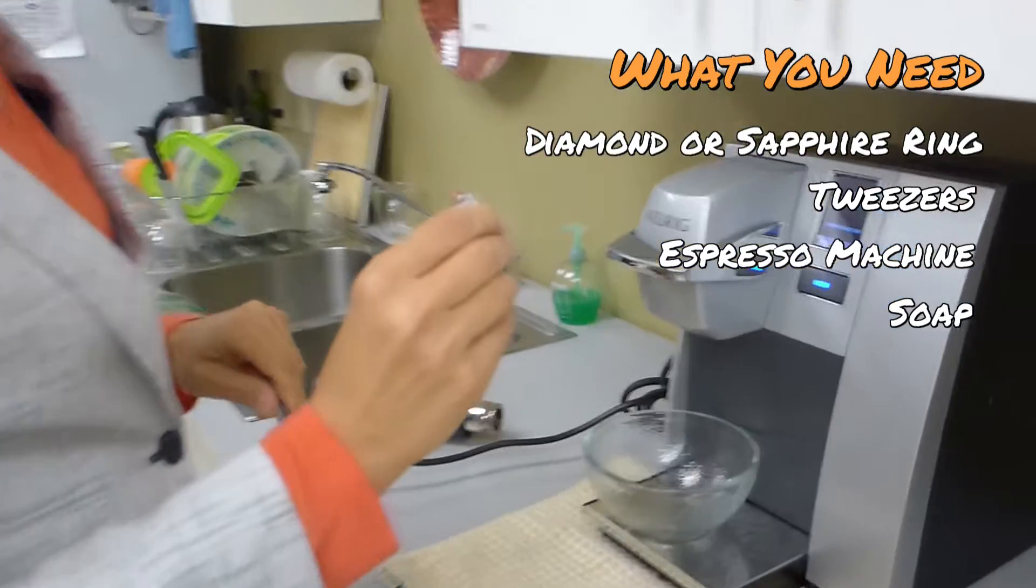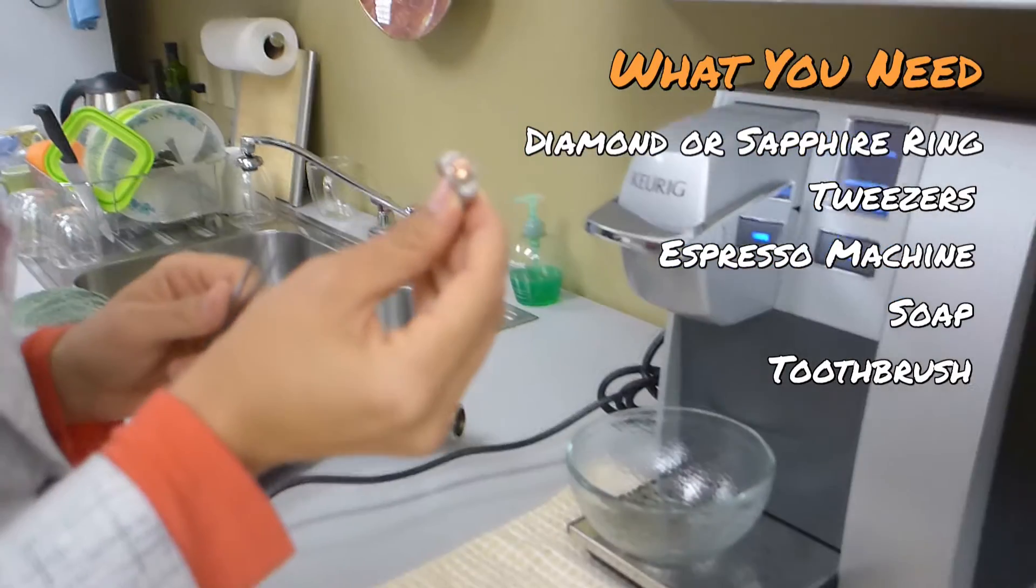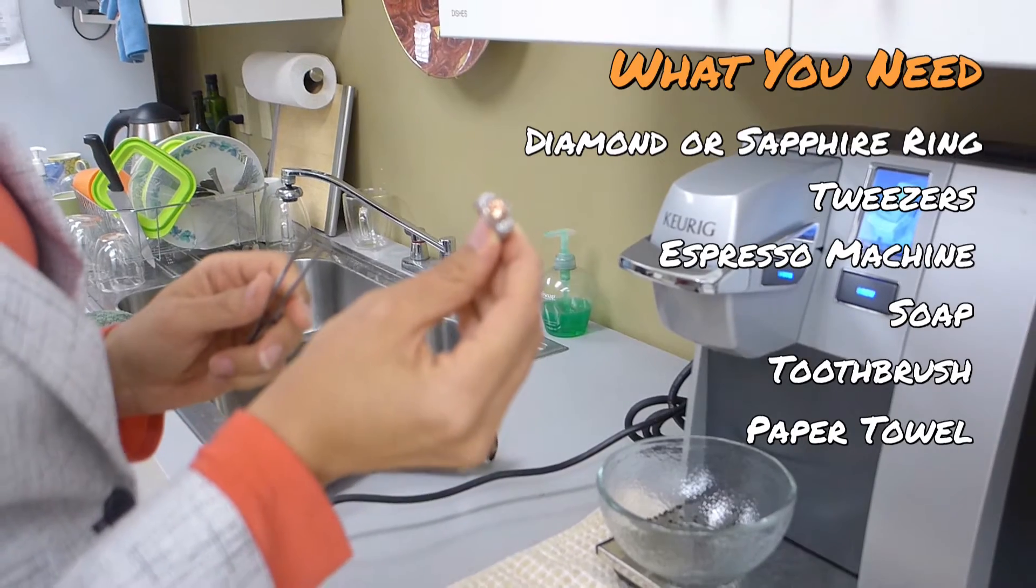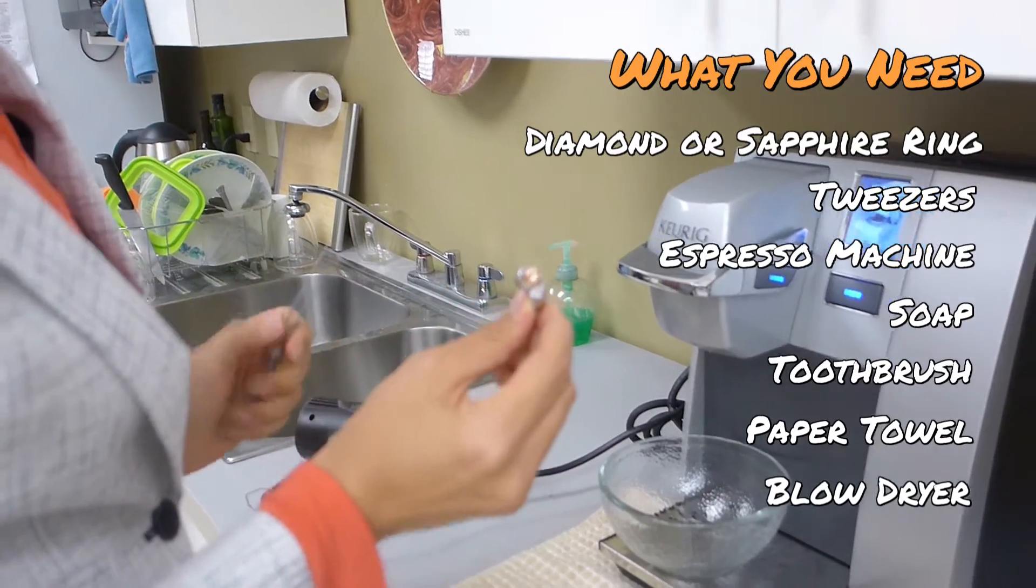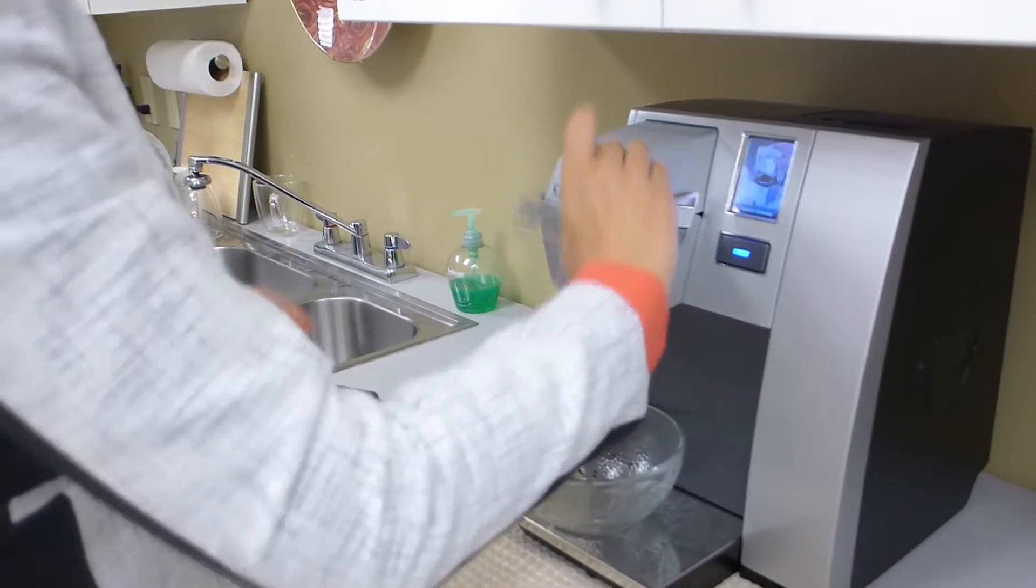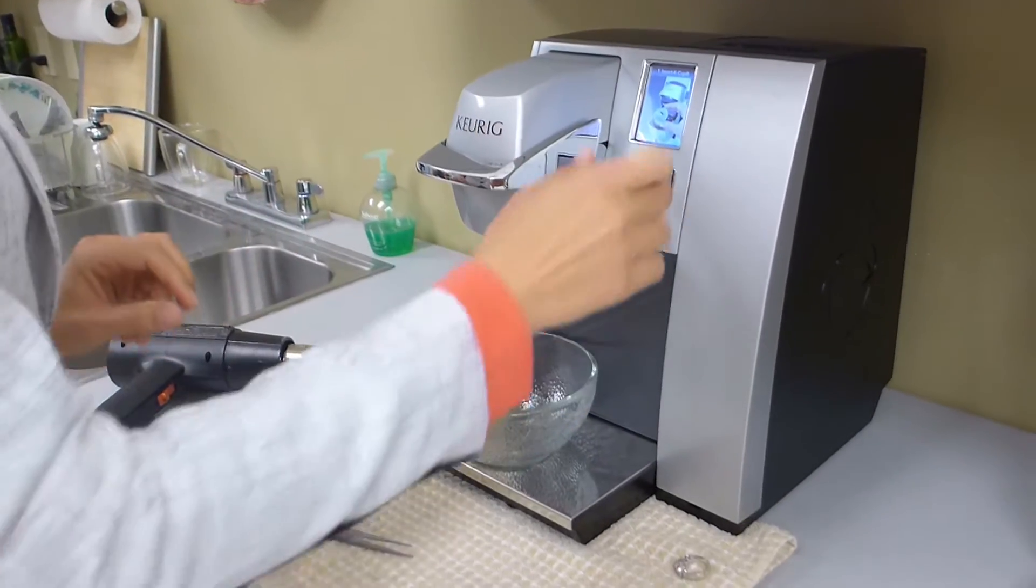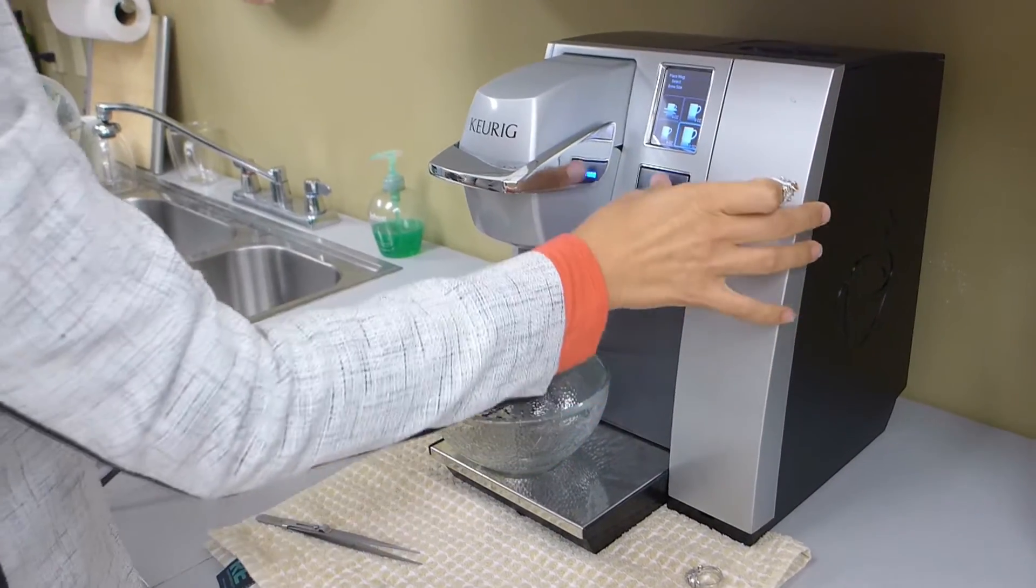So we're going to do something unique here. I'm going to take this ring and it has a nice little, the stones are a little dirty. And I am going to start by using this Keurig. I'm going to brew 10 ounces onto this ring.